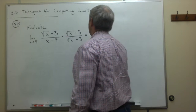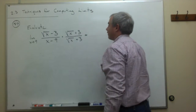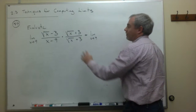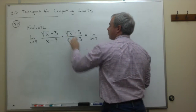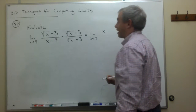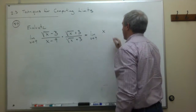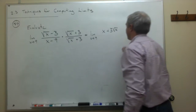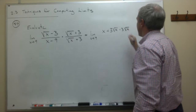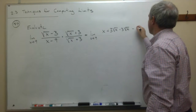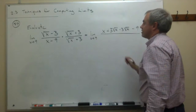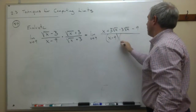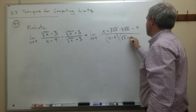After this multiplication, we have the limit as x goes to 9. Multiplying through on the numerator: the square root of x times the square root of x is just x; the square root of x times 3 gives plus 3 square root of x; minus 3 times the square root of x gives minus 3 square root of x; and negative 3 times 3 gives negative 9. On the bottom, we still have x minus 9, and we also now have a factor of square root of x plus 3.